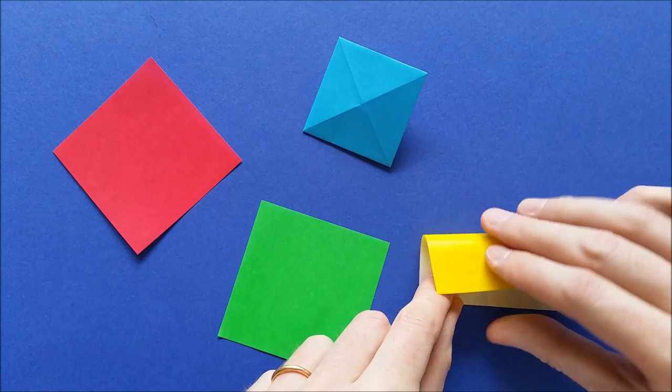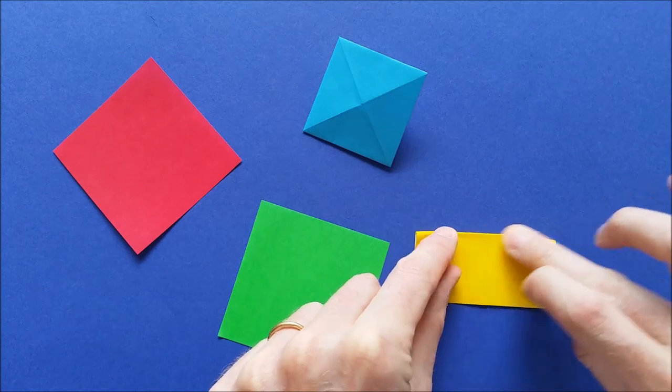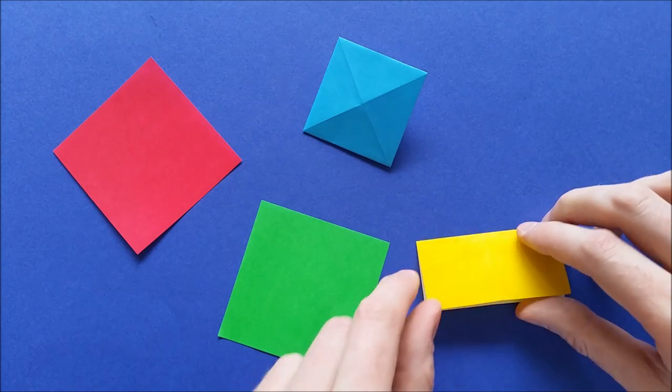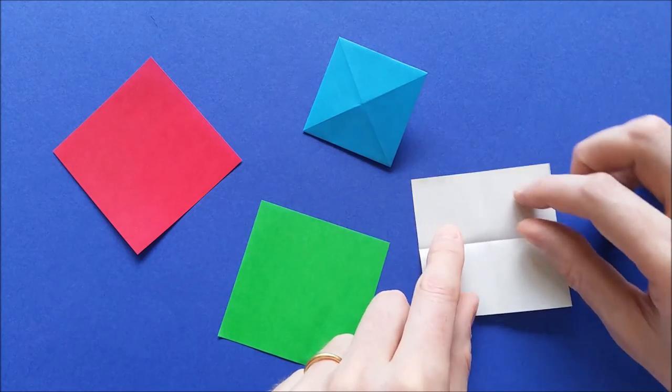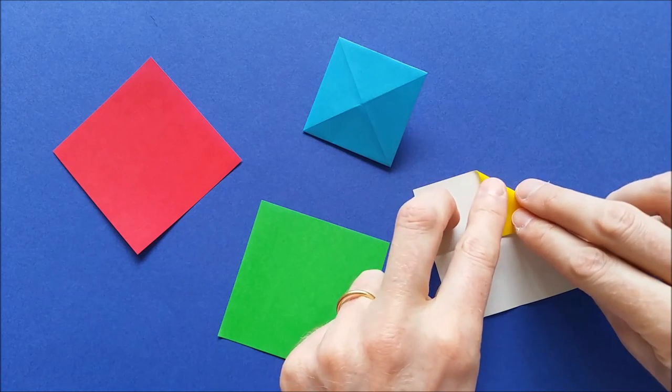Then fold the square horizontally. Mark the fold and unfold. And your pixel is almost done. Now you just need to bring all four corners to the center.